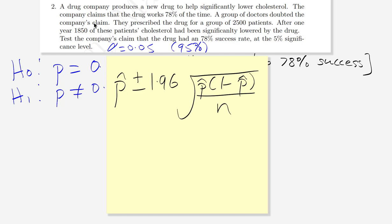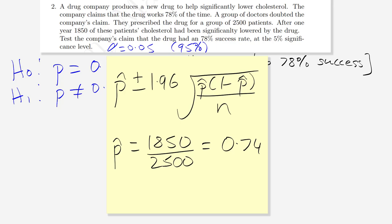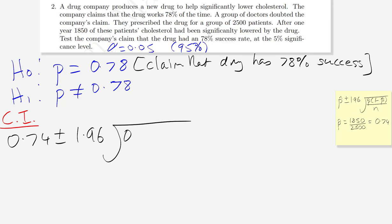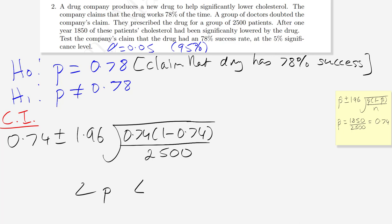We calculate p-hat, our sample proportion: 1850 divided by 2500 equals 0.74. The confidence interval is 0.74 plus or minus 1.96 times the square root of (0.74 times 0.26) divided by 2500. The true population proportion will lie somewhere between the lower and upper bound.